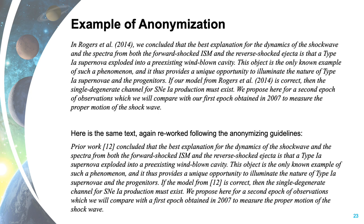Here's an example of anonymization — thanks to the Hubble team for allowing us to include it. The paragraph above has not been anonymized; the paragraph below has been. In yellow, 'in Rogers et al. 2014 we concluded' becomes 'prior work [12] concluded.' In green, 'if our model from Rogers et al. 2014 is correct' becomes 'if the model from [12] is correct.' And 'our first epoch' changes to 'a first epoch' to avoid signifying ownership.